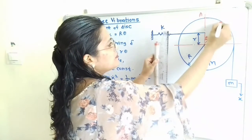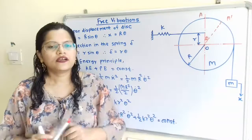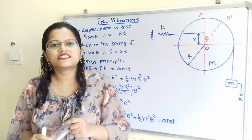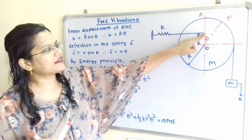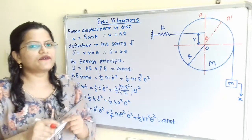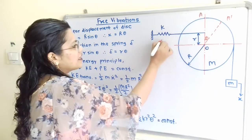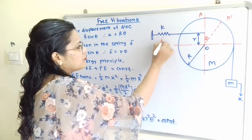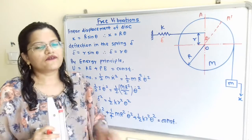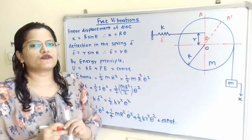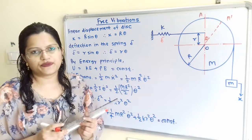The new position is A dash. The spring with stiffness K is also connected to the disk, and therefore there is a deflection delta in the spring. Now we will find out the kinetic energy in the system.